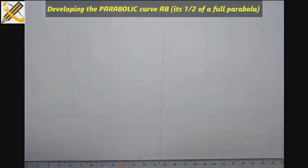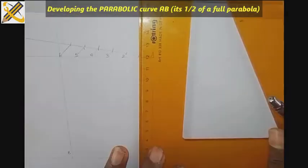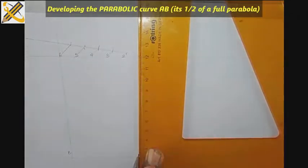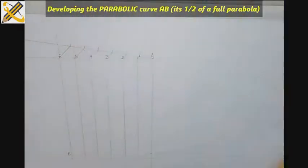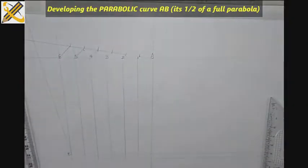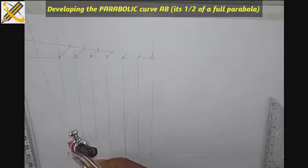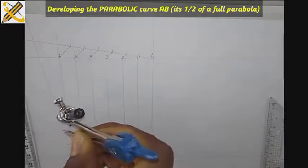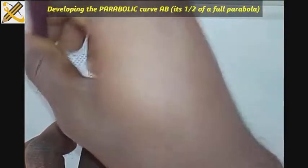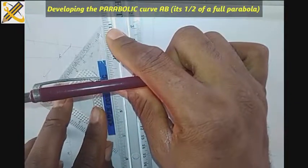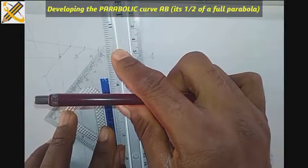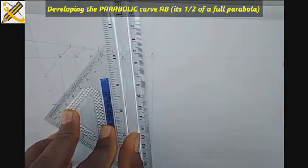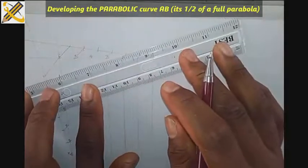This is point A, and this junction here is my point B. So having done that, the next thing is to develop my parabola.